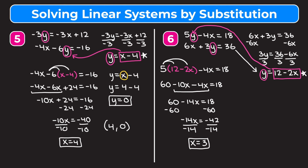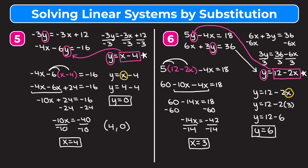Using y equals 12 minus 2x with x equals 3: y equals 12 minus 2 times 3 equals 12 minus 6 equals 6. So x equals 3 and y equals 6, written as the point (3, 6). To summarize: start by isolating one variable, substitute that expression into the other equation, solve for the first variable, then use it to solve for the second.